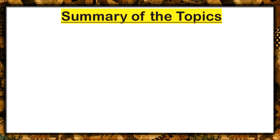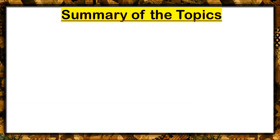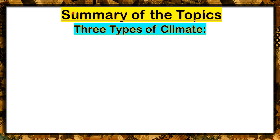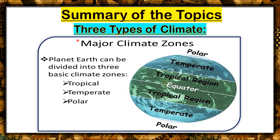Now for the summary of our topics. We have discussed the three types of climate. The planet Earth can be divided into three basic climate zones: tropical regions, temperate regions, and polar regions.